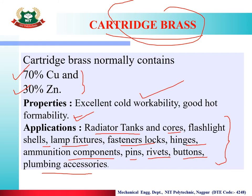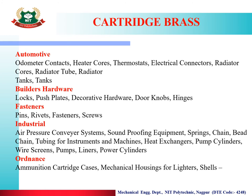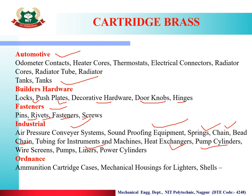In the automobile sector, cartridge brass is used for odometers, heater cores, thermostats, electrical connectors, radiators, radiator tubes, and tanks. For builders: locks, push plates, decorative hardware, door knobs, and hinges. For fasteners: pins, rivets, and fastening components. Also used for conveyor systems, soundproofing equipment, springs, chains, bed chains, tubing, heat exchangers, pumps, wire screens, pump liners, and power cylinders. In ammunition: cartridge cases, mechanical housings, and lighters.